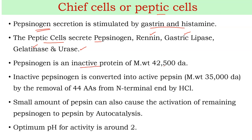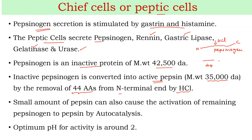Pepsinogen is the inactive protein with a molecular weight of 42.5 kilodaltons. This inactive pepsinogen is converted into active pepsin with a molecular weight of 35 kDa, by the removal of 44 amino acids from the N-terminal end, which is done by HCl. That is a main function of HCl — it acts on pepsinogen and removes approximately 44 amino acids from the N-terminal end, making it active pepsin.